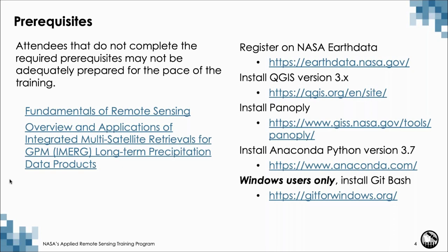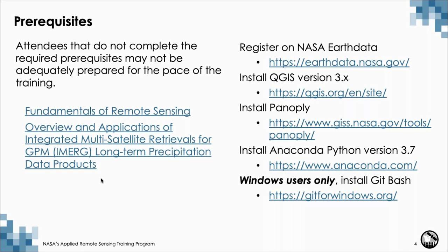Here are the prerequisites for this webinar series. If you have not gone through some of this information, we recommend you do so between now and next week. First, fundamentals of remote sensing — that's an online presentation and video covering remote sensing jargon. More importantly, there is a webinar and slides on overview and applications of iMerge long-term precipitation data products. It's crucial that you know details about the data sets. Since this is an advanced webinar, we assume you have basic information about iMerge, and ARSET has conducted several webinars on iMerge.